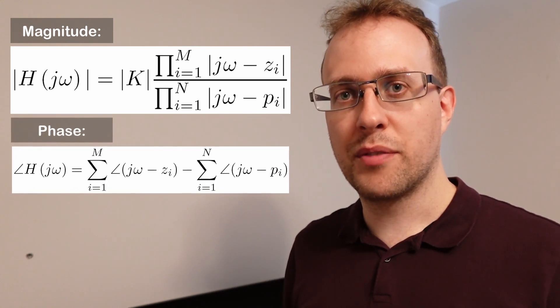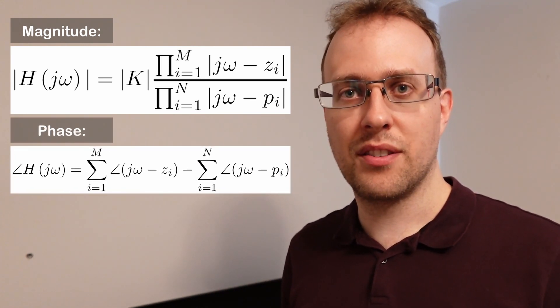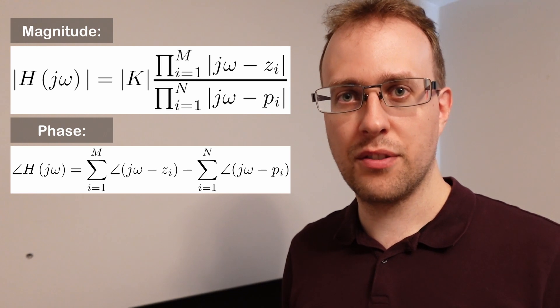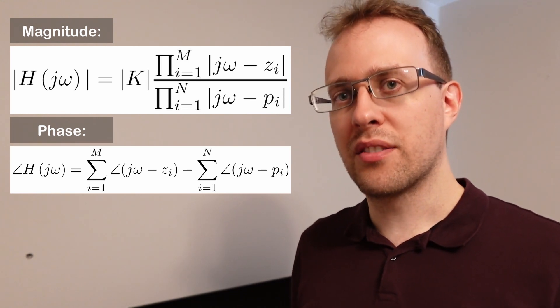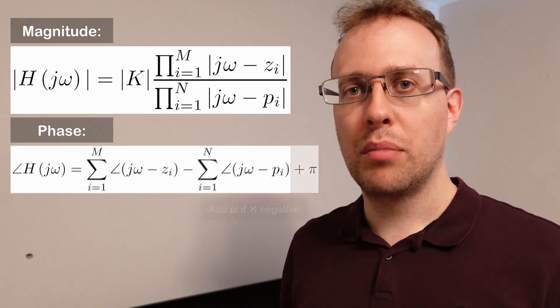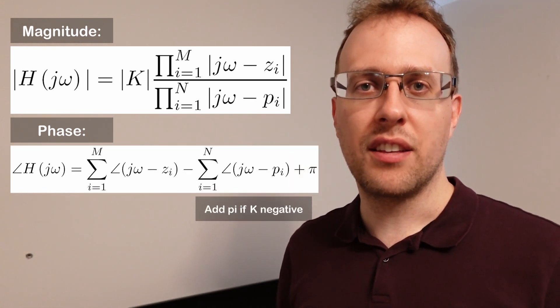Second, the phase of the system is found by taking the sum of the phases of the individual zero vectors, subtracting the sum of the phases of the individual pole vectors, plus pi if the gain K is negative.